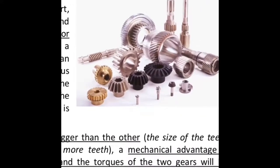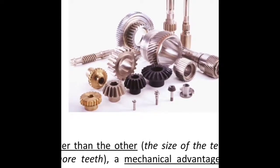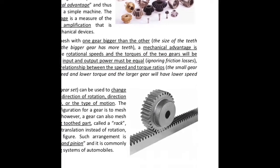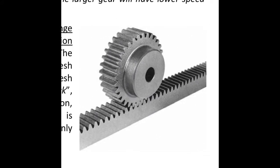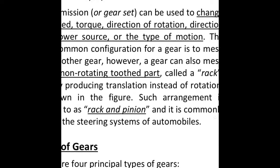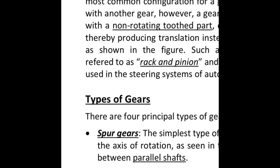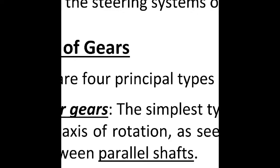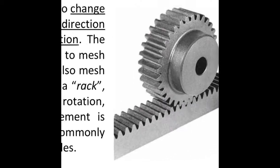Two or more gears working together are called a transmission or gear set, and can produce mechanical advantage, thus may be considered a simple machine. The mechanical advantage is a measure of the force or torque amplification obtained using mechanical devices. When two gears mesh with one gear bigger than the other, the size of the teeth must match, thus the bigger gear has more teeth. A mechanical advantage is obtained where the rotational speeds and torques of the two gears will be different.